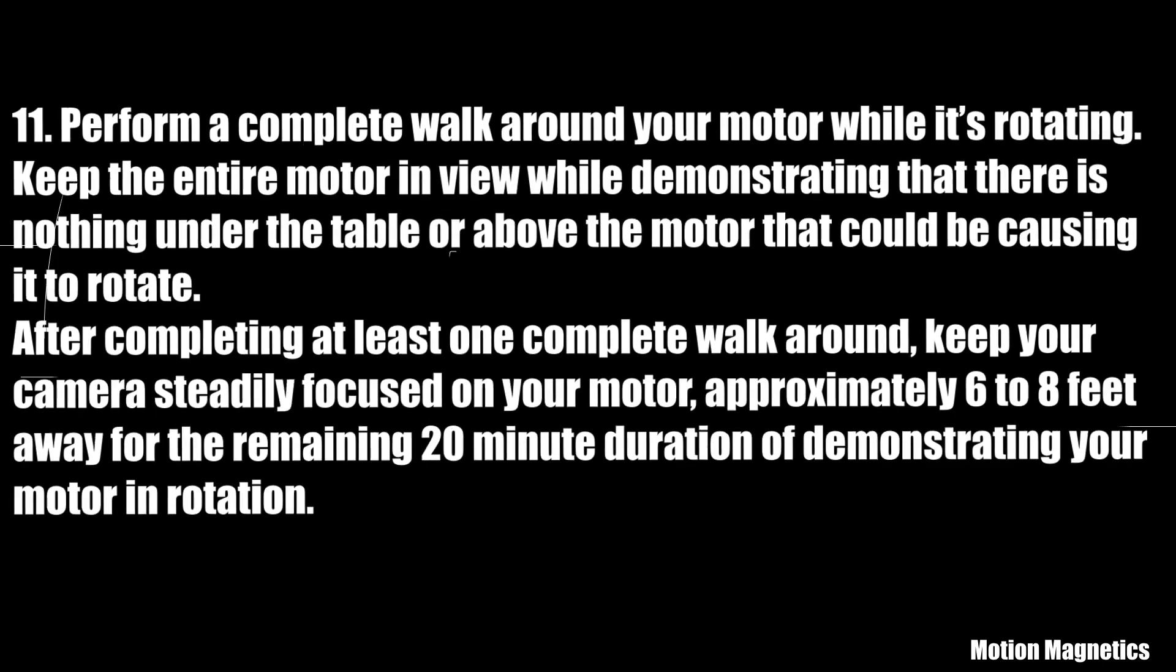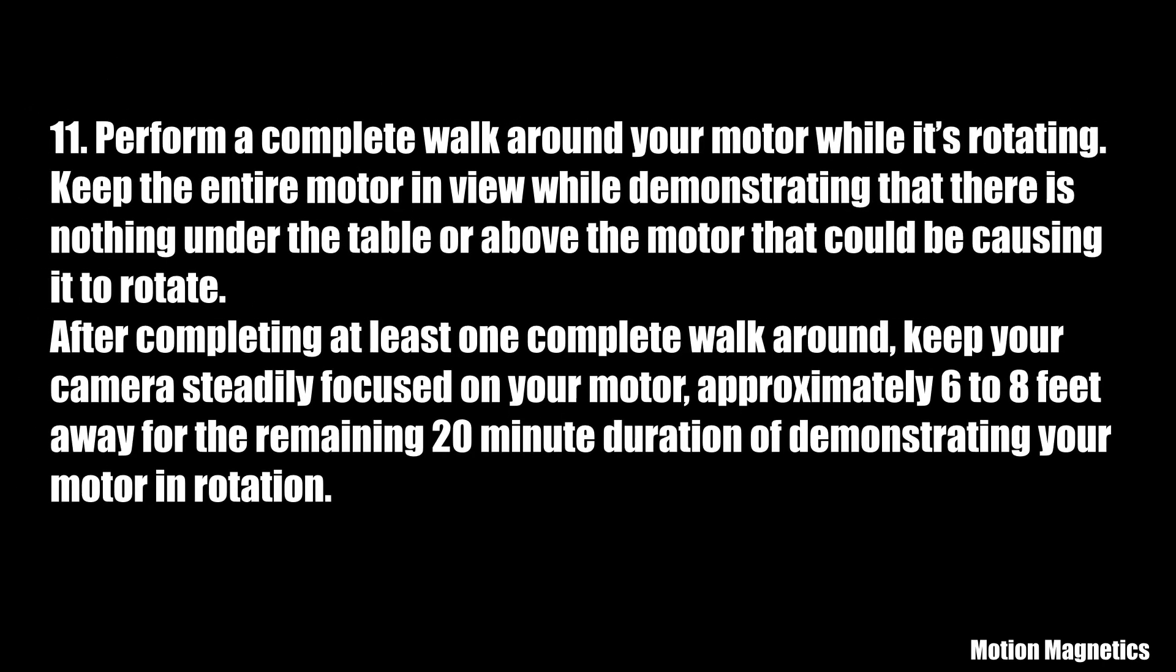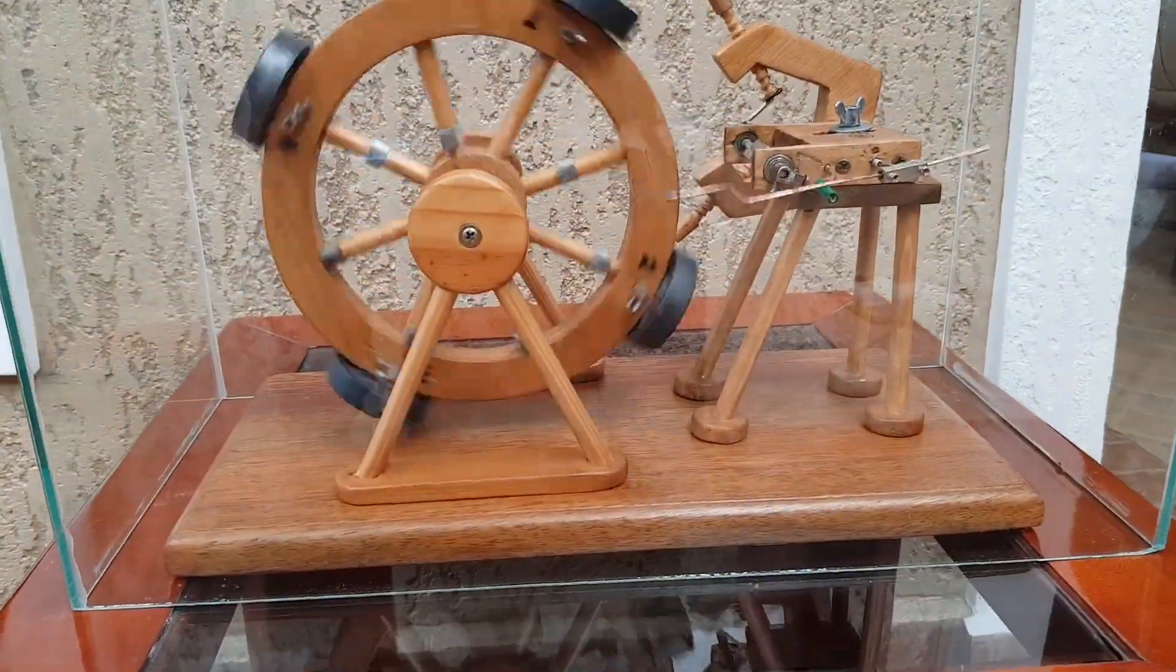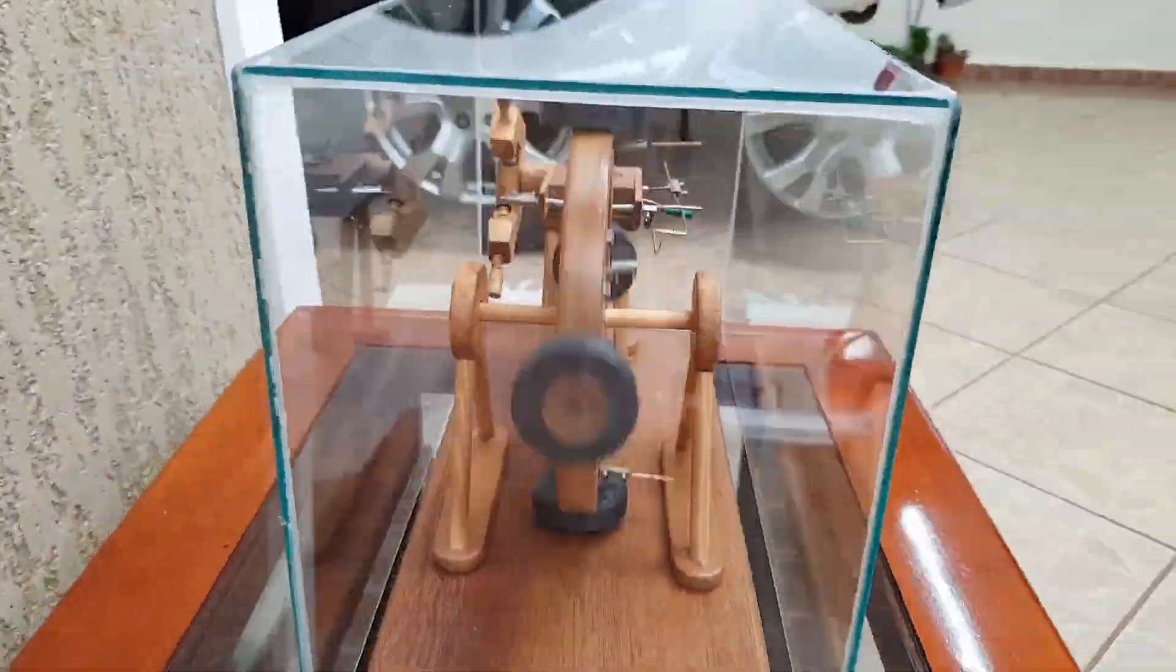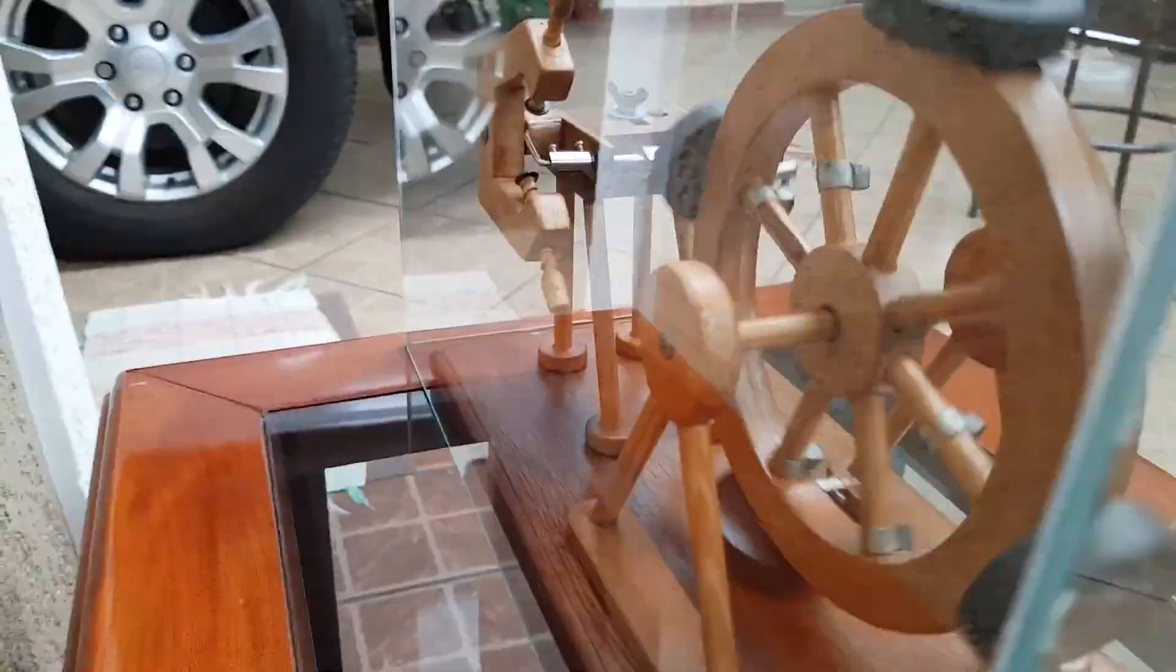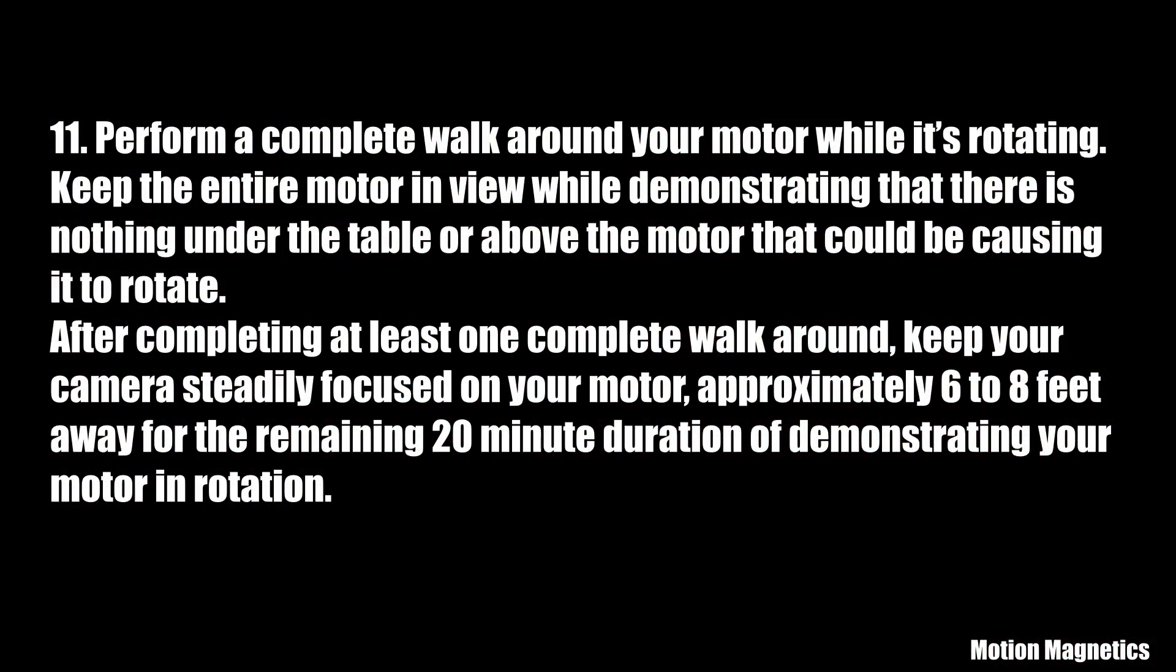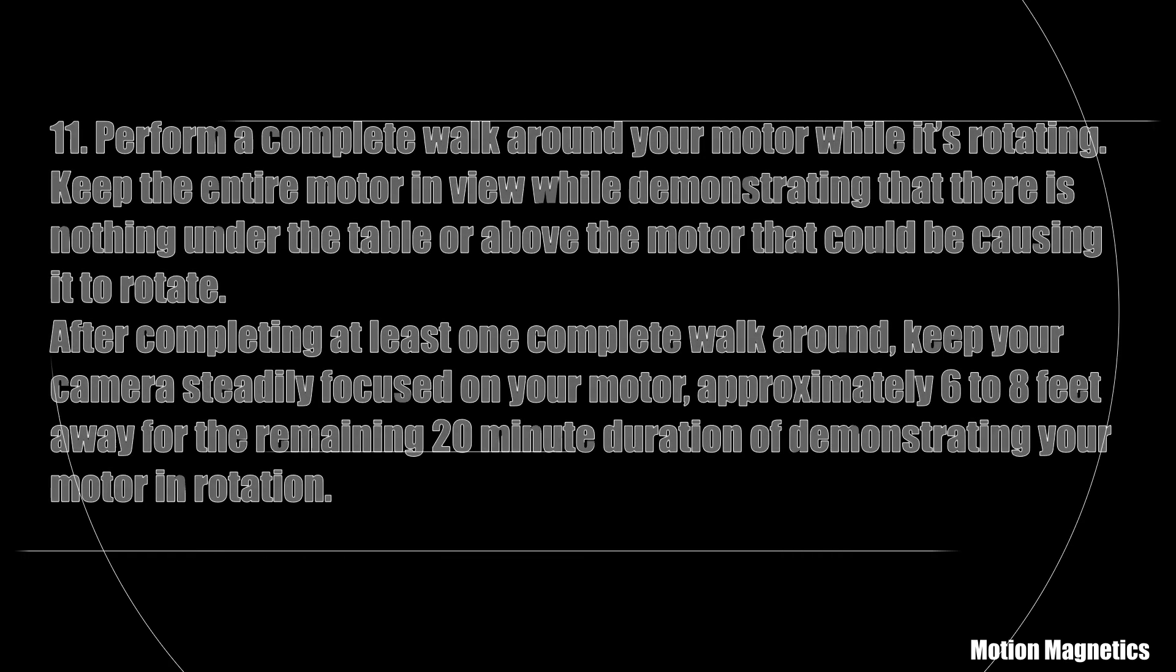Guideline 11: Perform a complete walk around your motor while it's rotating. Keep the entire motor in view while demonstrating that there is nothing under the table or above the motor that could be causing it to rotate. After completing at least one complete walk around, keep your camera steadily focused on your motor approximately 6 to 8 feet away for the remaining 20 minute duration.